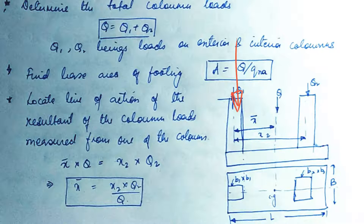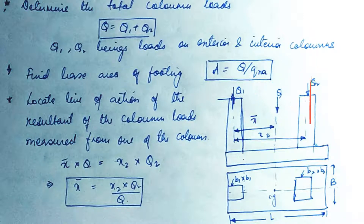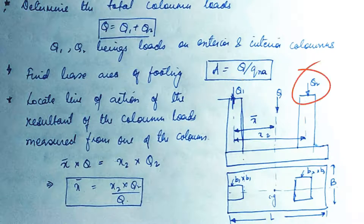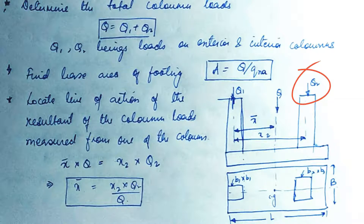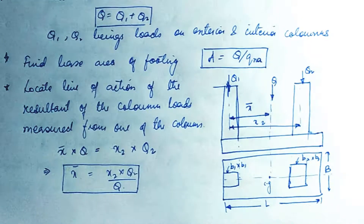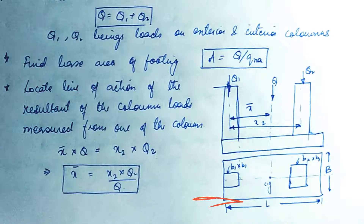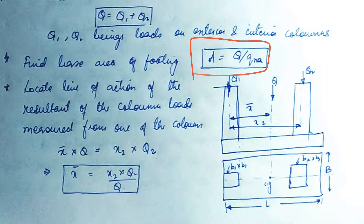A load Q1 acts on the first column and load Q2 acts on the second column. First, we find the total load acting on the footing: Q = Q1 + Q2. Next, we find the required area of the footing. Since we already know the net allowable bearing capacity of the soil, the required area is: Area = Q / q_allowable.